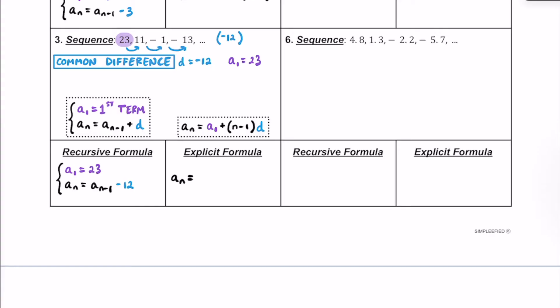For the explicit formula, we have a sub n equals a sub 1, which we know in this case is going to be 23. Plus we're going to add this n minus 1 expression multiplied by the common difference. In this case, the common difference is negative 12, so we multiply by negative 12.